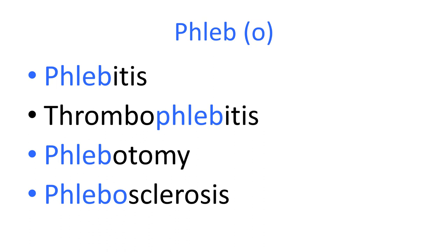Phlebotomy — -otomy means to make an opening into or cut into — so phlebotomy is making an opening into a vein, as we do for venipuncture: removing blood samples or placing an intravenous catheter. Phlebosclerosis is hardening of a vein, sometimes called venosclerosis, sometimes caused by venofibrosis where fibrous tissue develops in the vein wall — often as a consequence of long-term inflammation. Also called induration of a vein — reduced elasticity and general hardness. Phlebosclerosis is a descriptive term but not frequently used in clinical practice.